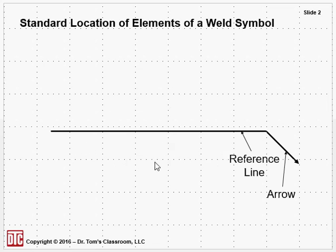The standard location of elements of a weld symbol is a complex figure, so let's build this one thing at a time. First you have your reference line horizontal, and then an arrow line. It could have been up, I just made it down. Those are your two basic things - you'll always have those two elements.